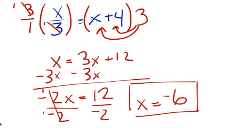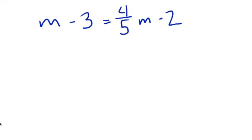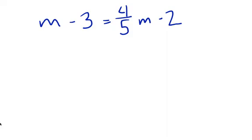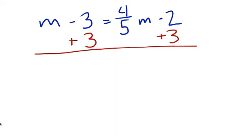This might be a little bit confusing, so I just want you to follow along, follow the examples, write what I write, and when you come to class the next day we'll answer any questions. Here's another one. If you can combine anything easily — I see that we can combine this negative 3 and this negative 2 — let's add 3 here and add 3 there to get rid of that first. So now that leaves me with m equals 4 fifths m, and negative 2 plus 3 is positive 1.